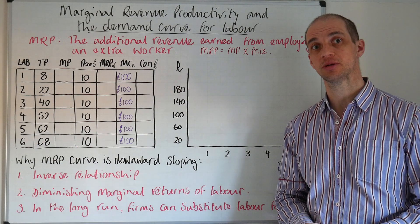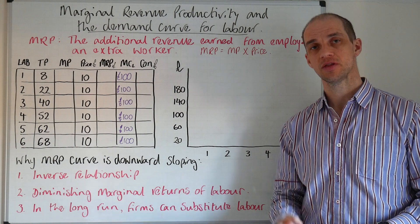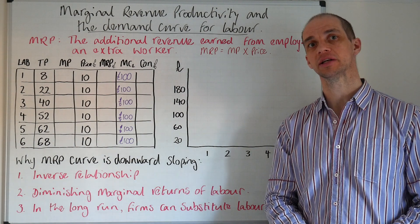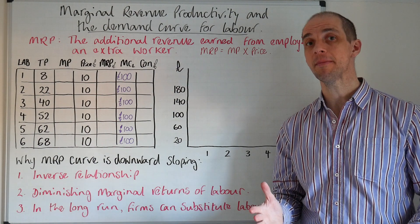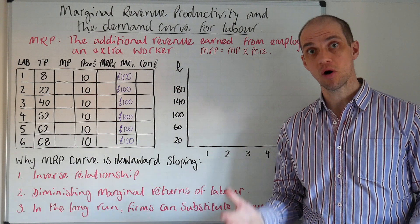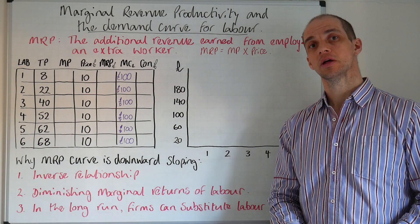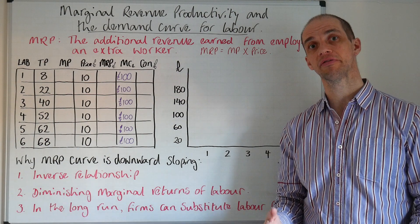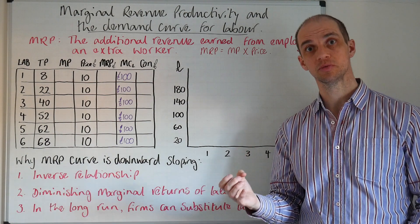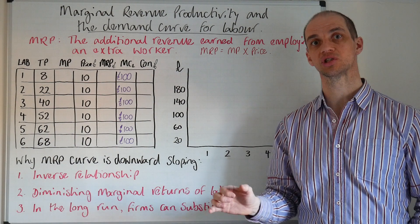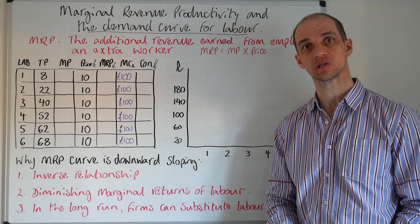Hi everyone. In this session we are going to understand the demand curve for labour. Before we move on any further, it's so important throughout this labour economics unit that you remember that the demand for labour is a derived demand. The demand for labour comes from the firm and is derived from consumers' demand for the product or service. That's a really important point throughout this labour economics.